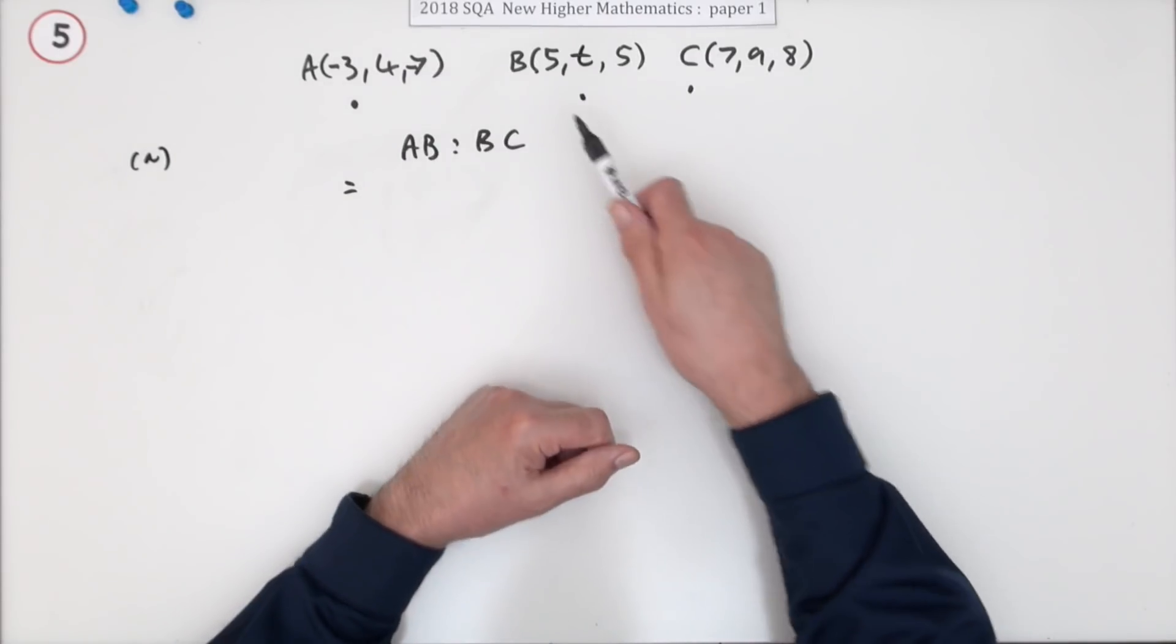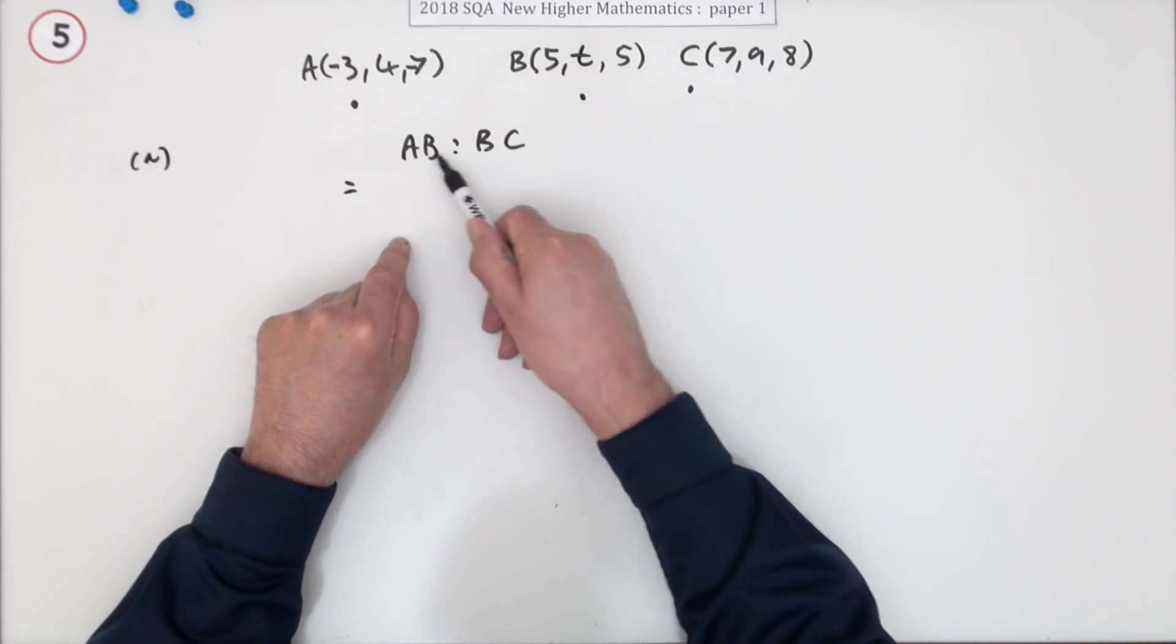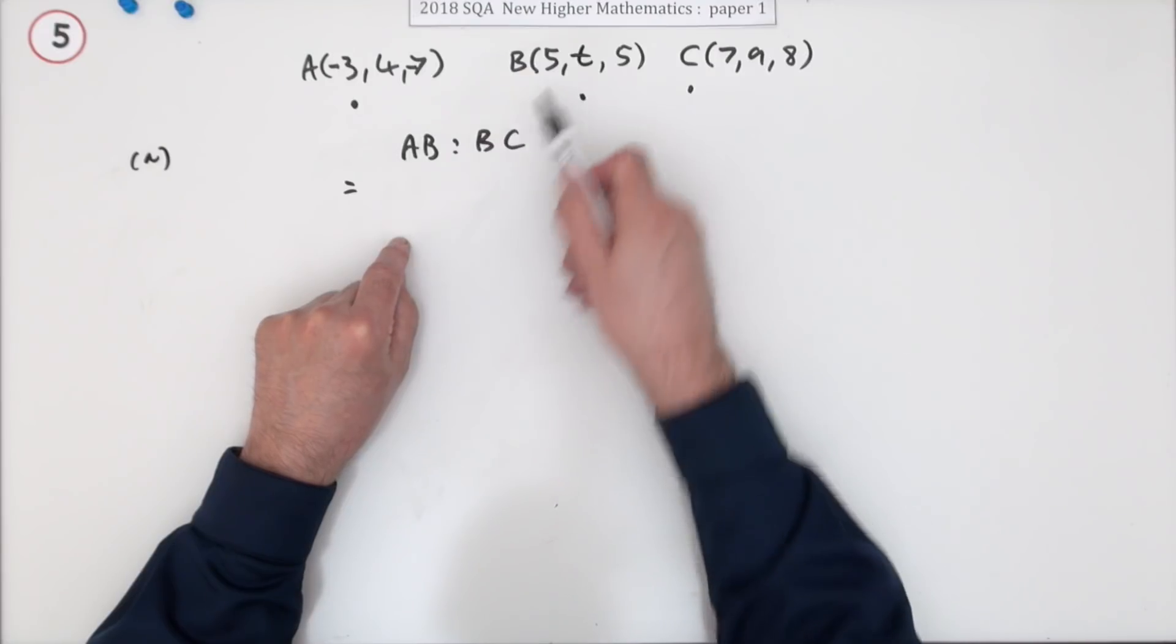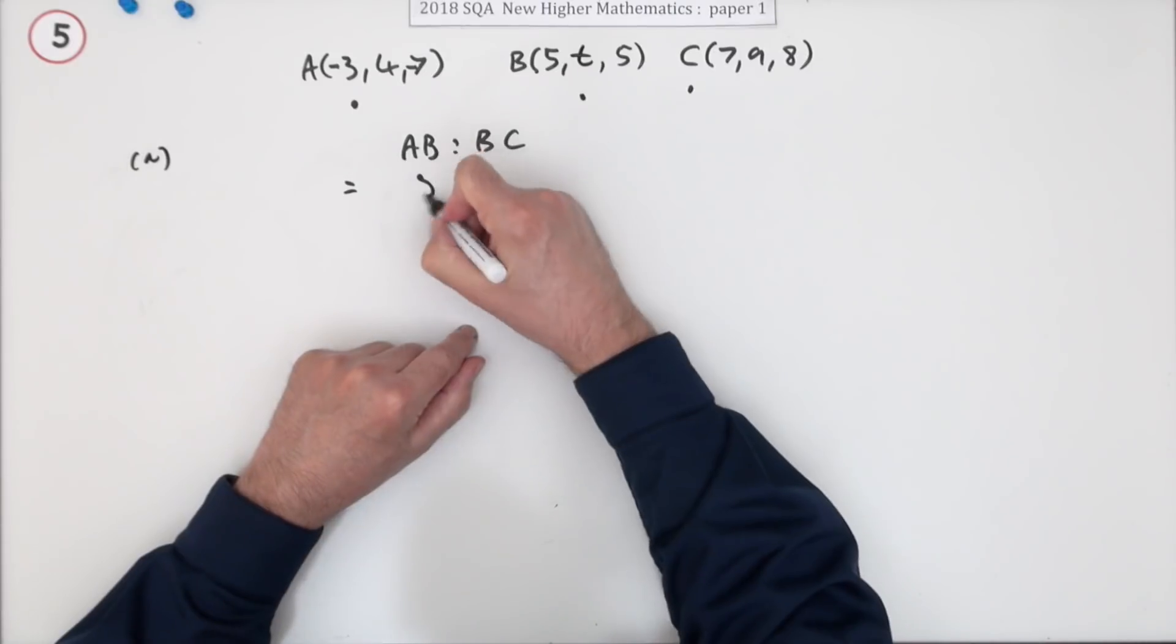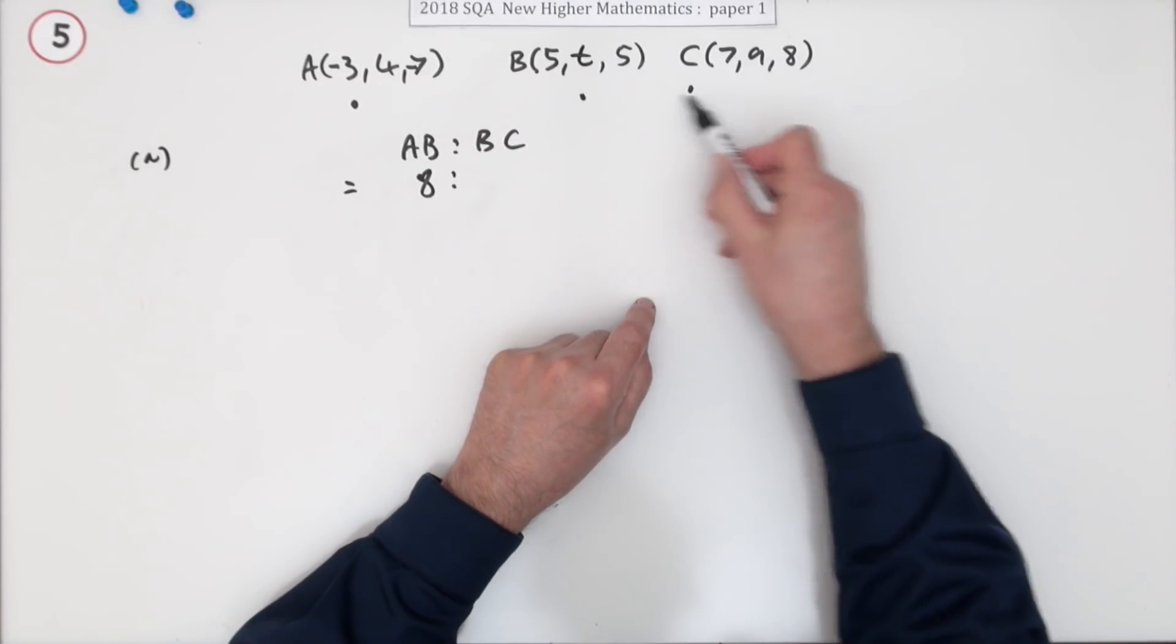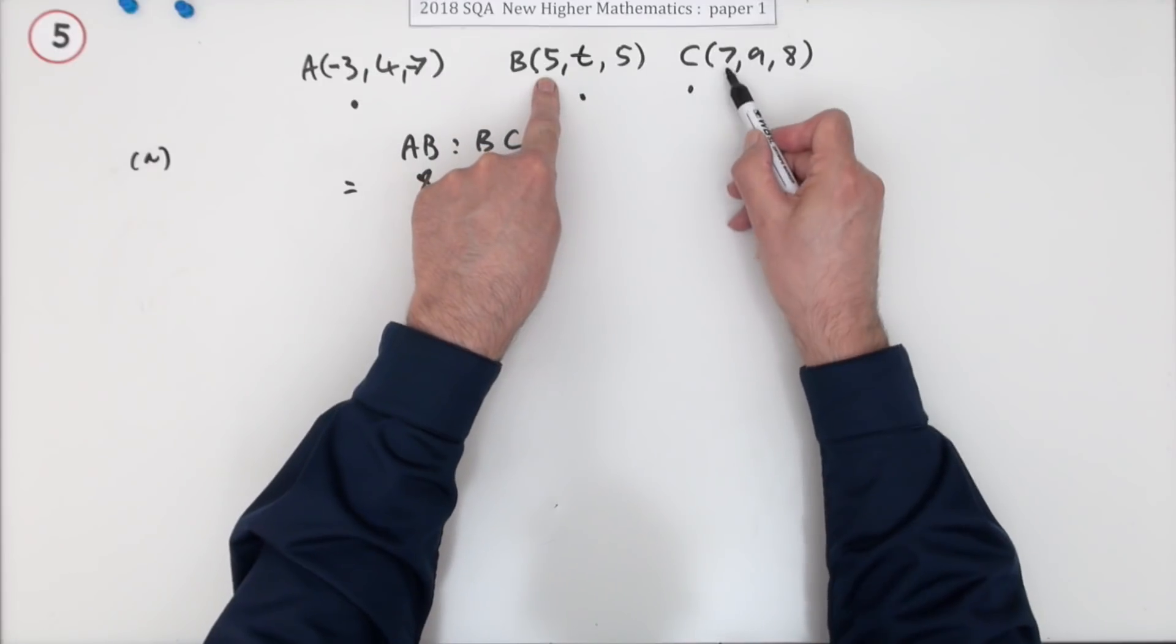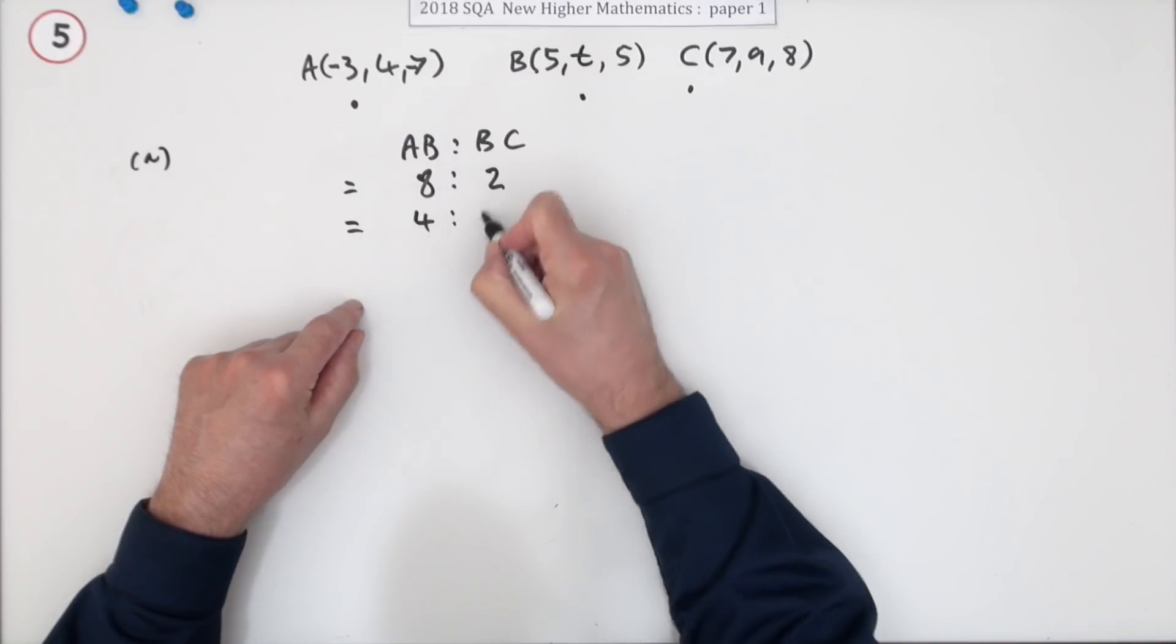You can identify the parts. What would be the x component of the vector AB? You're going from negative three to five, that's eight steps forward. What would be the x component of the move BC? You're going from five to seven, that's two steps forward. There's your answer, it's four to one.